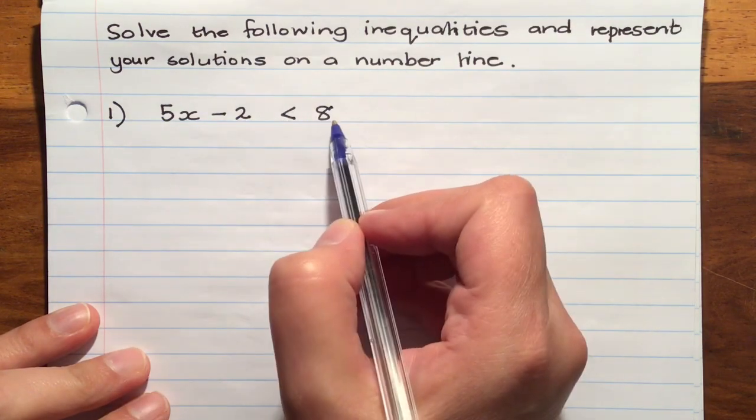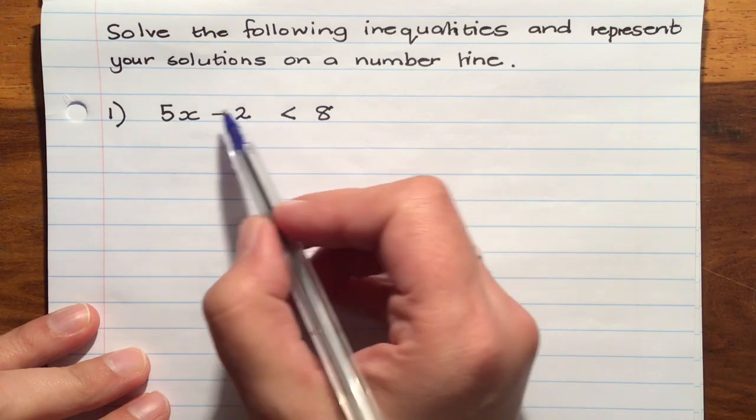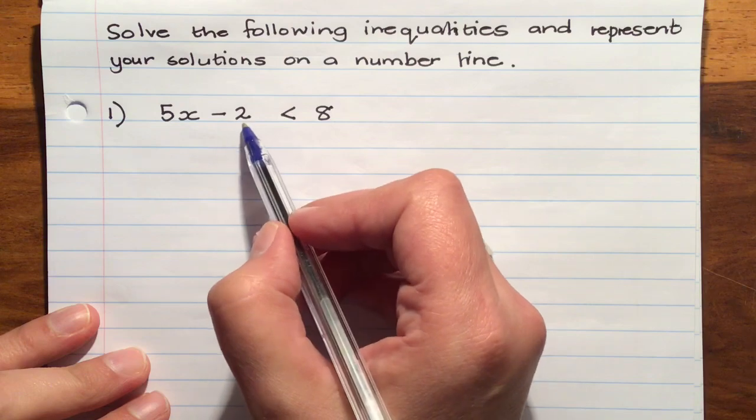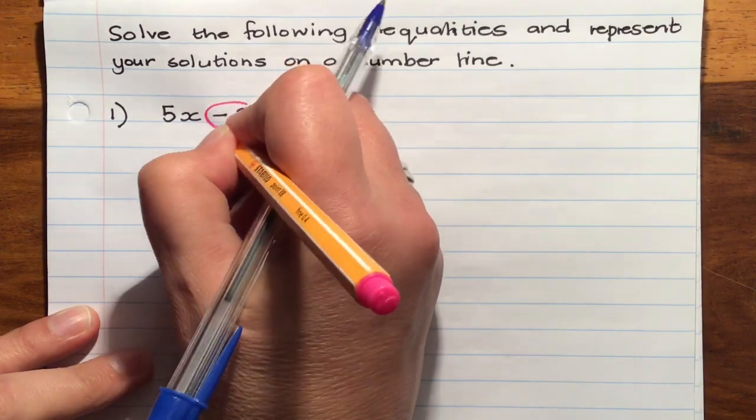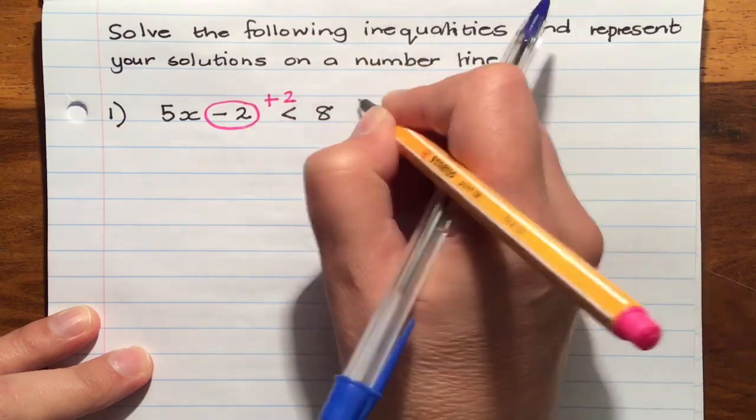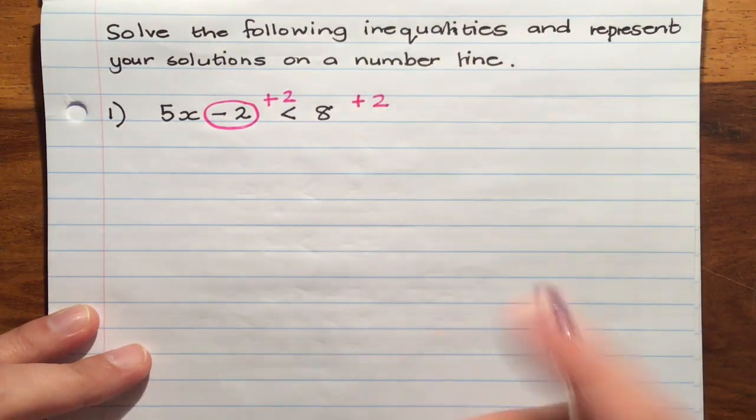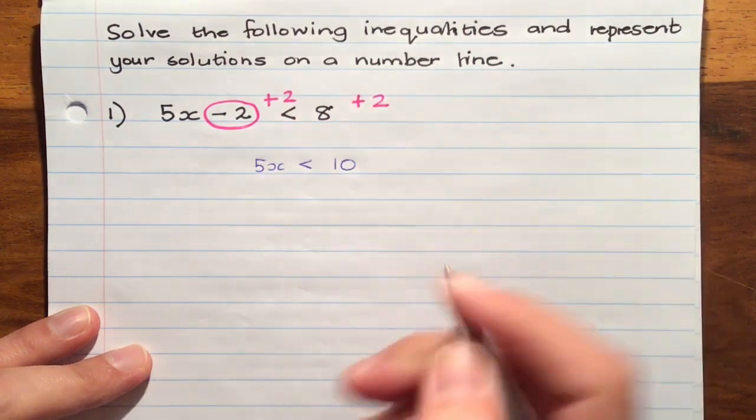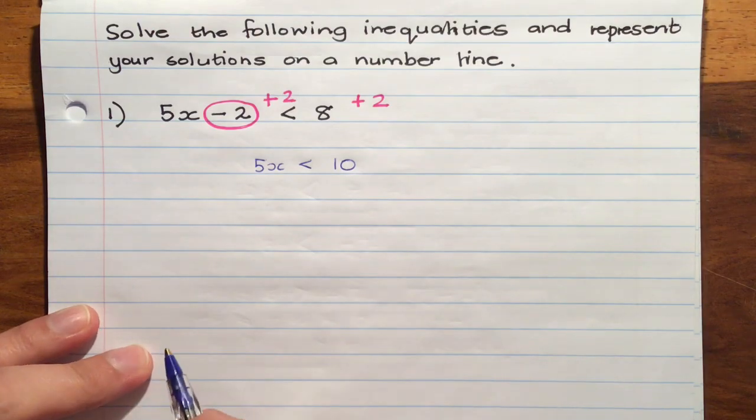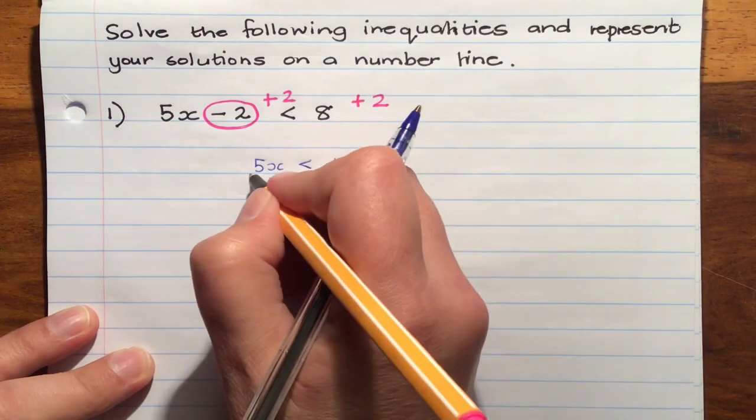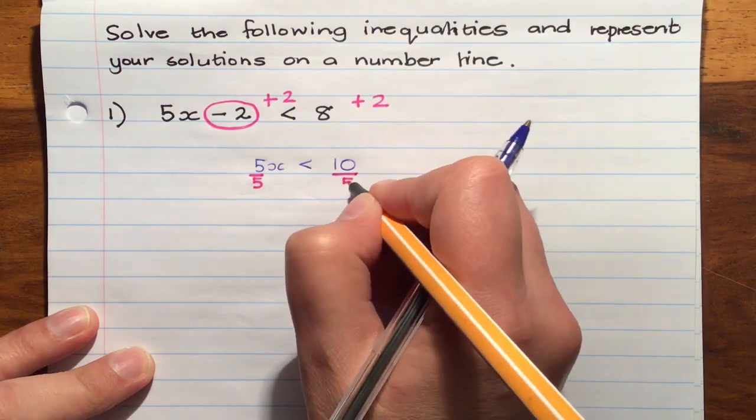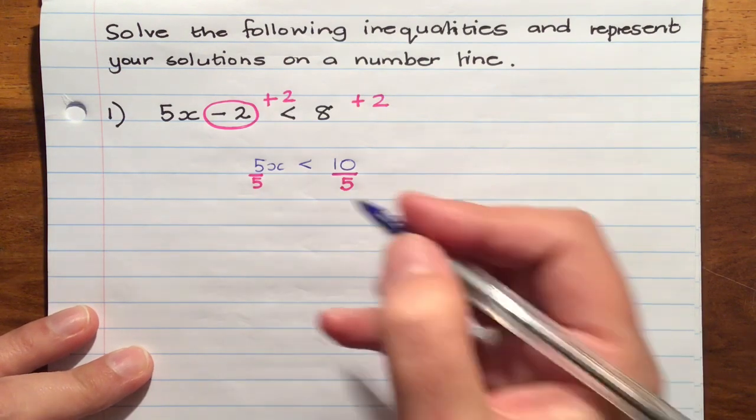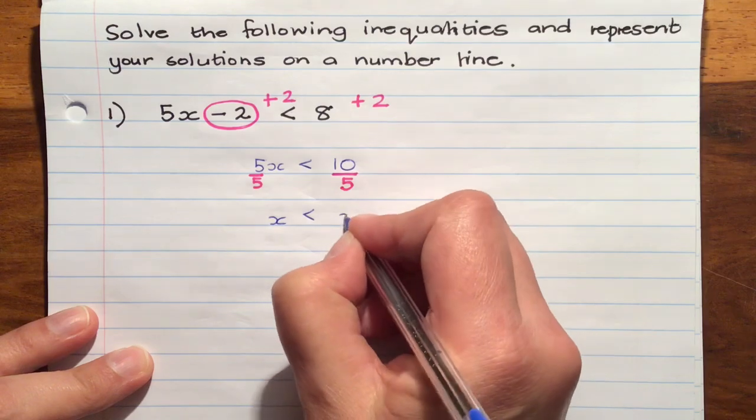5x minus 2 is less than 8. So let's just treat it like an equation for now and say what can I do? I could get rid of this negative 2 by adding 2 to both sides. Just like an equation we're now going to get 5x is less than 10. And then how would you get rid of the 5? We're going to divide by 5 on both sides. Now we're dividing by a positive number so nothing needs to change. x is less than 2.